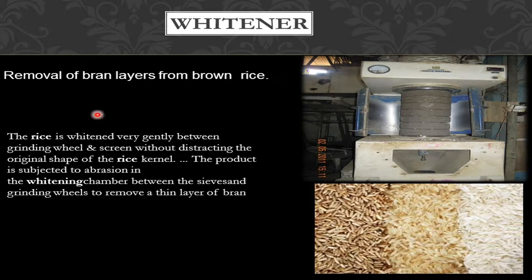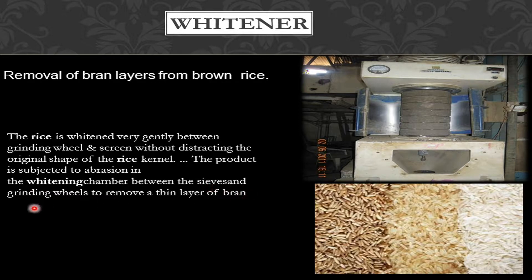Next is the whitener — removal of bran layers from brown rice. The rice is whitened gently between a grinding wheel and screen without distorting the original shape of the rice kernel. The product is subjected to abrasion in a whitening chamber between sieves and grinding wheels to remove a thin layer of bran. This is how the whitener looks like, and you can see the difference between brown rice and whitened rice.